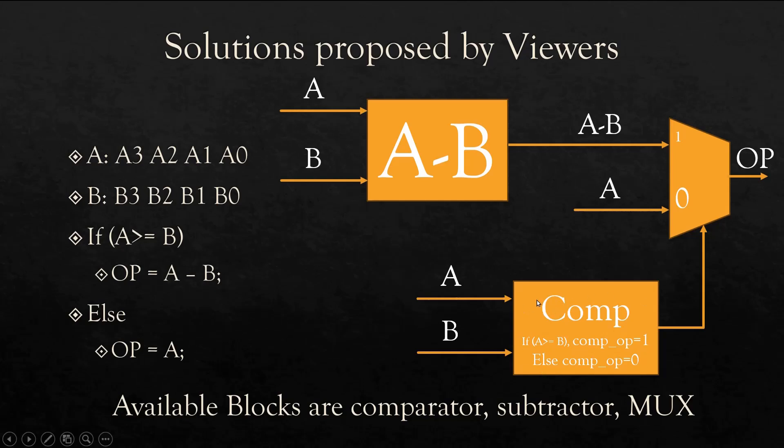If A is greater than B, output is equal to A minus B. Else, output is equal to A. So there they are putting the comparator which is implementing this statement. Let us say when A is greater than or equal to B, this comparator will give us output as one. If it is false, then it will give us zero. To implement if-else statement, we need a 2-to-1 multiplexer.